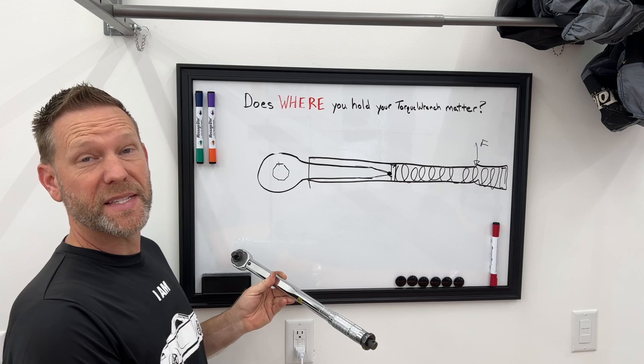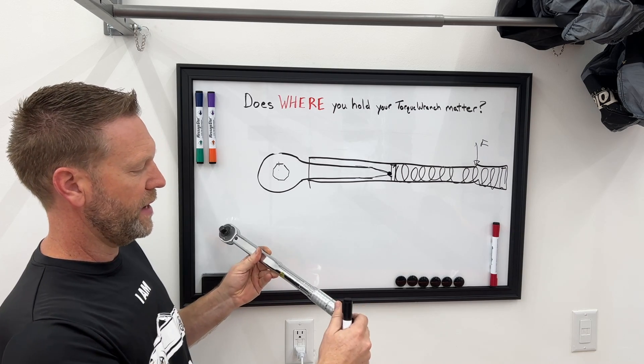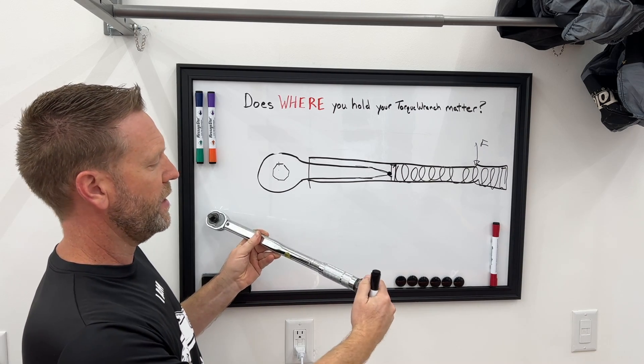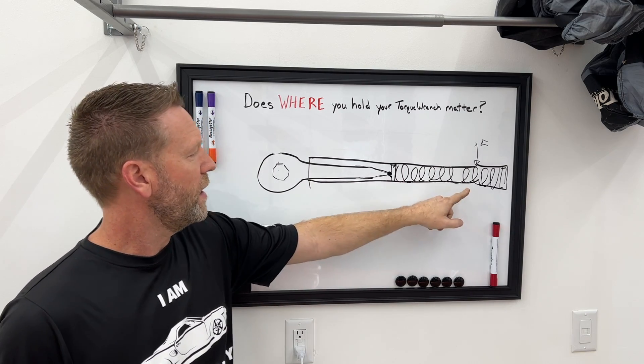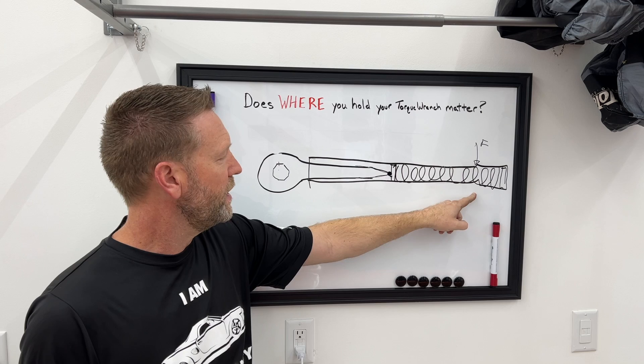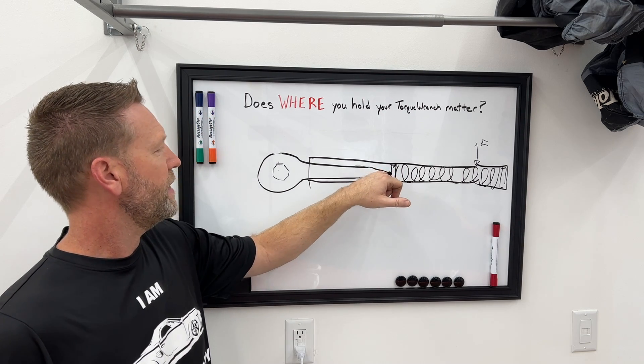So from our previous example, if we wanted to do 20 foot pounds, you would dial this in 20 foot pounds, lock it in, and it is calibrated to apply force from the middle of the handle and make that thing disengage.